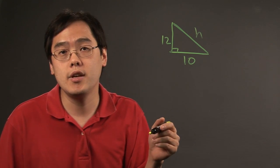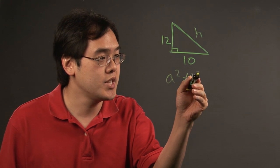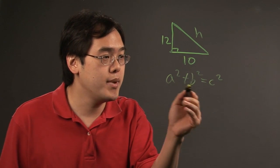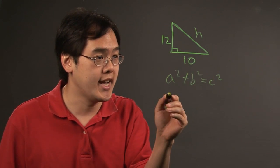So if you remember the formula for the Pythagorean theorem, a squared plus b squared is equal to c squared. The idea here is that a and b are your legs and that makes the 10 and 12 your legs. And then we're going to find the c which is h.